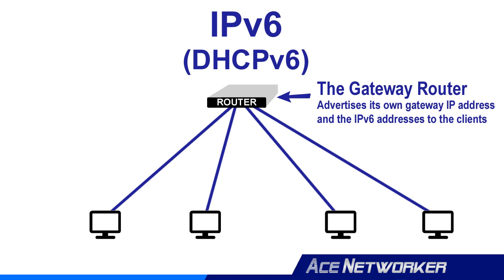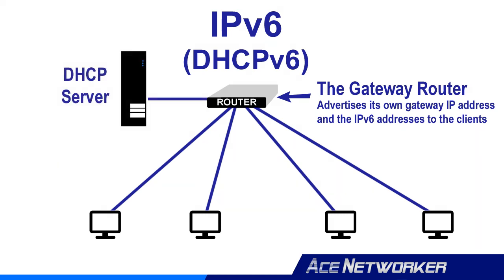But you want to stop right there. DHCP is still alive and well and needed within an IPv6 network, because those gateway routers don't actually pass out any other important pieces of information in their advertisements like other DHCP servers do in an IPv4 system. The only thing they advertise is the IPv6 address and their own gateway IP address to the clients or computers on that network. So if you still want other important pieces of information passed out to those computers and clients on the network, you will still need a DHCP server to perform that function.